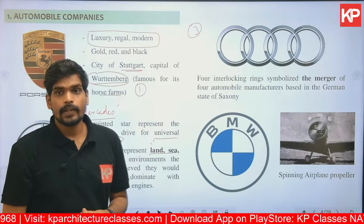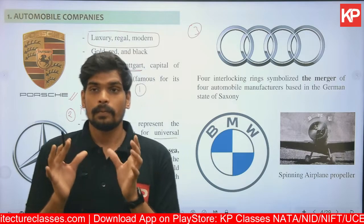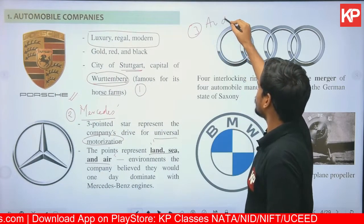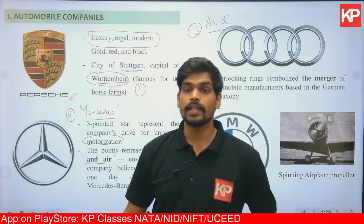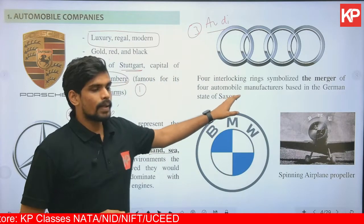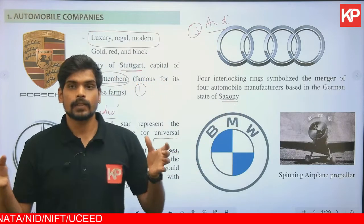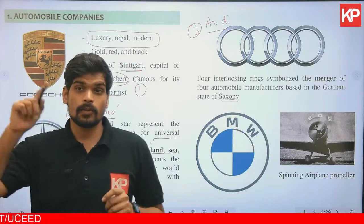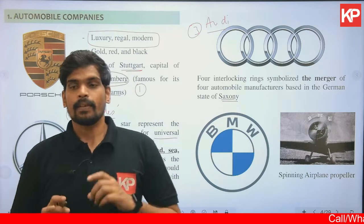The third important logo is Audi. There was a question in NATA 2022 on the meaning of the Audi emblem. Audi uses a four-circle logo, and these four circles represent the four automobile companies in the German state of Saxony that came together to form one company called Audi. That is why there are four overlapping circles.